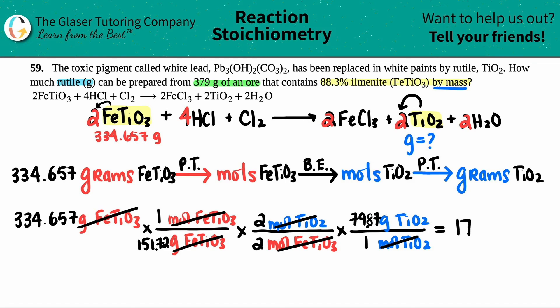176 grams of TiO2 is your final answer. You can make 176 grams of rutile if you had 379 grams of ore containing 88.3% ilmenite. That's it.